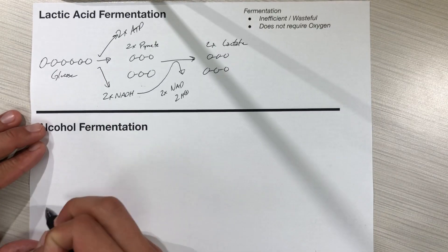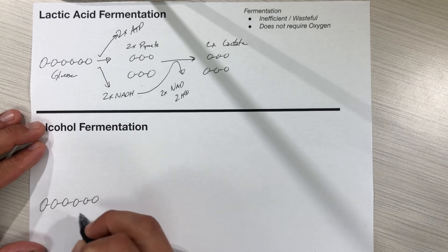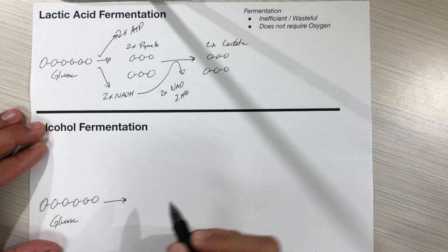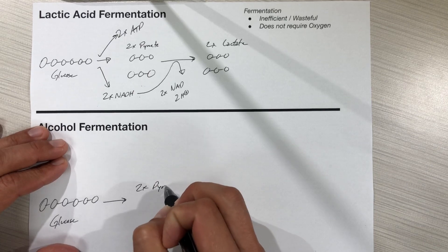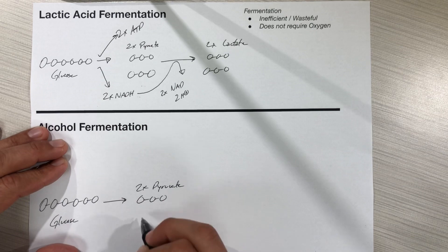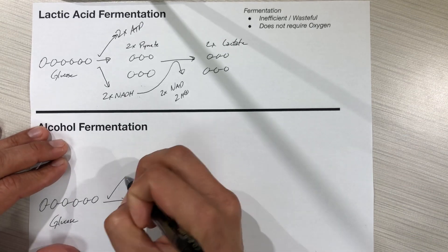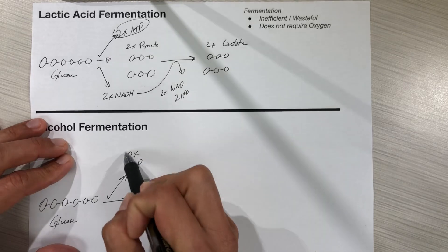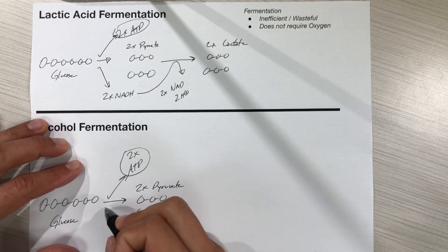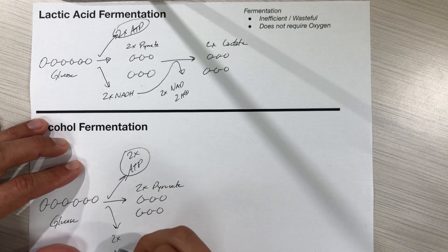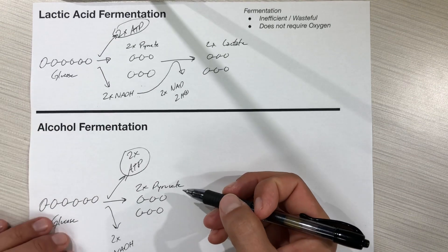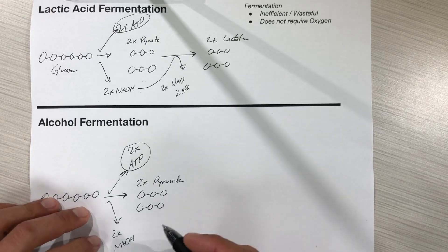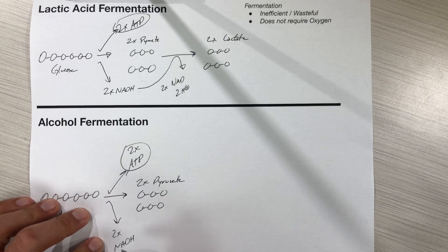The next one is alcohol fermentation. With alcohol fermentation we start with the same thing — six-carbon glucose — and just like before, we're going to go through the steps of glycolysis and create our two molecules of pyruvate. During that process we create two molecules of ATP, and that two ATP is really our only payout from the entire process. We're also going to create two molecules of NADH. NADH is a valuable molecule — if we could use the electron transport chain we could get more ATP — but since that isn't available, we need to do something to get rid of this NADH.